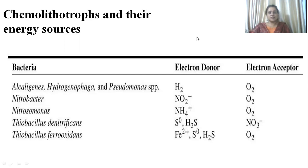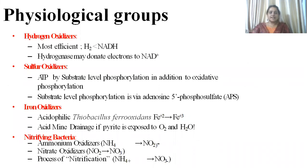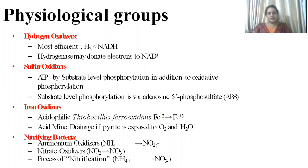Physiological groups are divided on the basis of their substrate requirement. The first group is hydrogen oxidizers — they are the most efficient for production of reducing power and they possess the hydrogenase enzyme for electron transport. The second group is sulfur oxidizers, which is actually a major group of chemolithotrophs; they synthesize ATP by substrate-level phosphorylation as well as oxidative phosphorylation. The third group is iron oxidizers — these acidophilic organisms are economically and commercially very valuable.